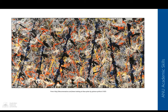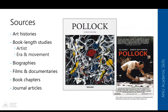For example, if you chose to undertake a visual analysis of Jackson Pollock's Blue Poles — the wonderful artwork currently housed at the National Gallery of Australia — there are a number of different sources you could consult. These include art history books, book-length studies of the artist or the era and movement in which he operated, biographies, films and documentaries, book chapters, and journal articles on the subject. So you have quite a wide range of sources at your disposal for this established artist.